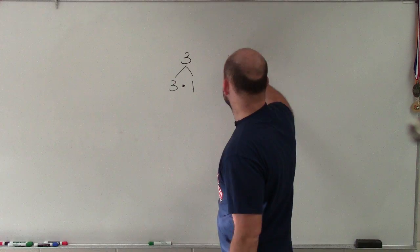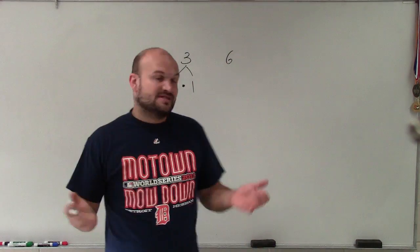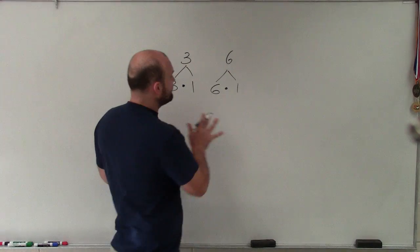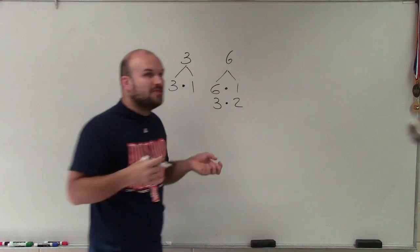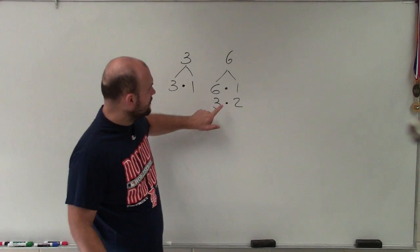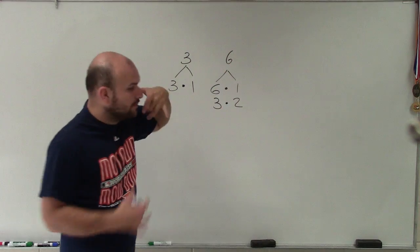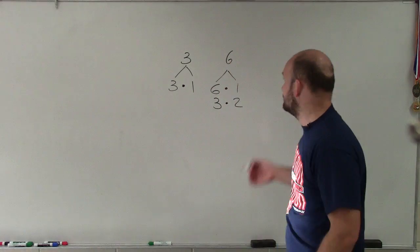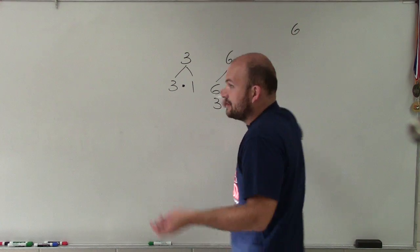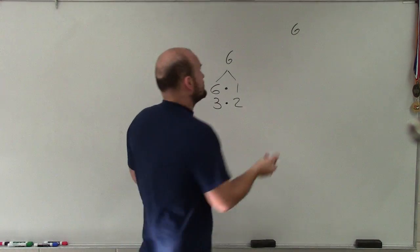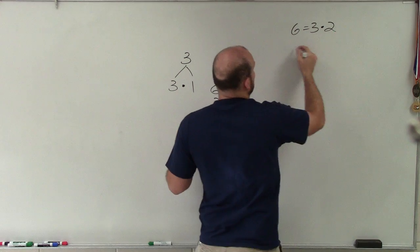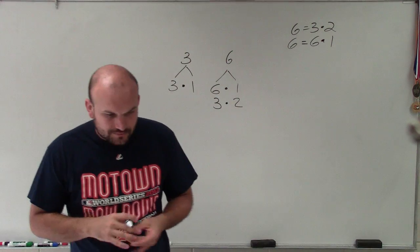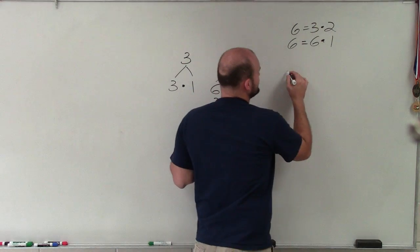Now let's look at a non-prime number — let's look at six. Six has six and one as factors, but it's not prime because another set of factors is three and two. Those are factors because three times two equals six. So whenever we're looking into factoring, we're basically rewriting a number as a product of its factors. If I say factor six, I want you to rewrite it as three times two, or also as six times one.